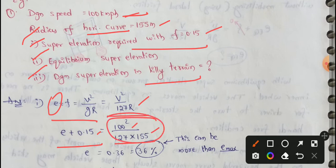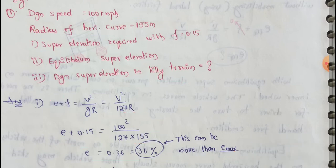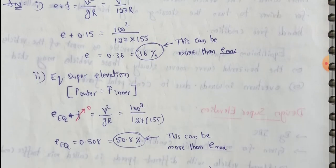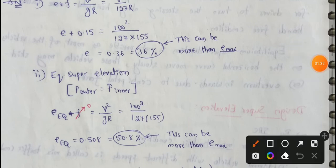Solving this, the E value is 0.36, which means 36%. This is more than the E maximum. As per IRC, 36% exceeds the maximum super elevation allowed.